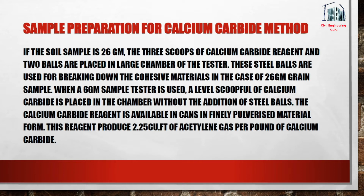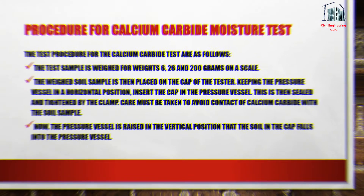The steel balls are used for breaking down cohesive materials. When a 6 gram sample tester is used, a level scoop full of calcium carbide is placed in the chamber without the addition of steel balls. The calcium carbide reagent is available in cans in finely pulverized material form. This reagent produces 2.25 cubic feet of acetylene gas per pound of calcium carbide.